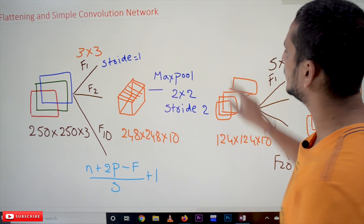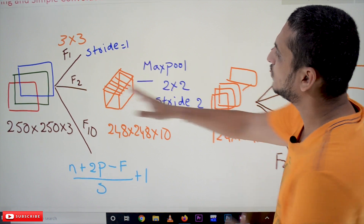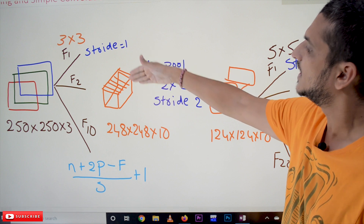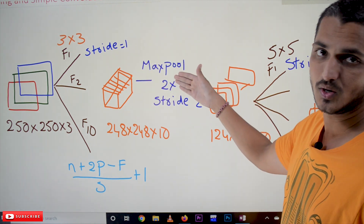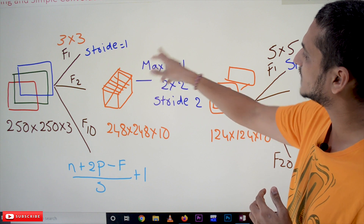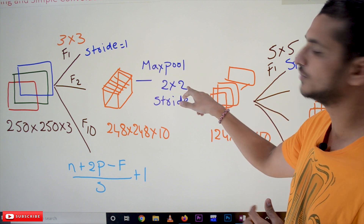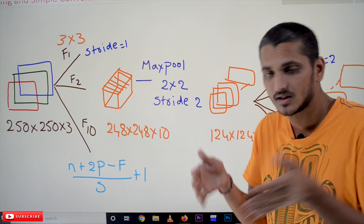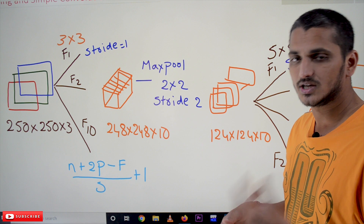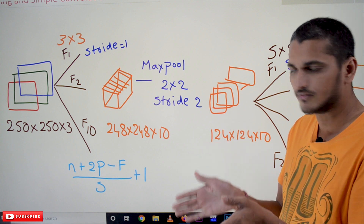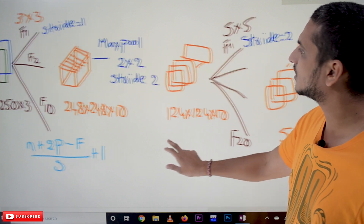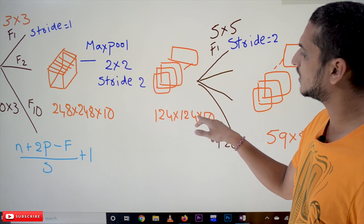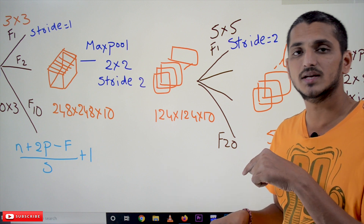The output from the convolution layer — 248 by 248 by 10 channels — is taken as input to the max pool layer. Each channel is passed into the max pool layer with a 2 by 2 matrix and stride equal to 2. The max pool layer reduces the size of the image to half. The image after passing through the max pool layer is 124 by 124 by 10, where 10 means 10 channels.